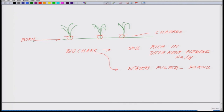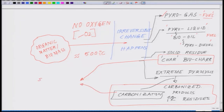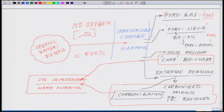Going back to the previous slide: when a charring or pyrolysis process is done, we get pyrogas — a form of fuel. We also get pyroliquid, bio oil, or pyrodiesel — another form of fuel. The solid residue left behind, or the carbonized product, has significance for soil improvement as well as water filtration. This biocharring or pyrolysis process is very extensively used in the chemical industry to produce a myriad of different products.